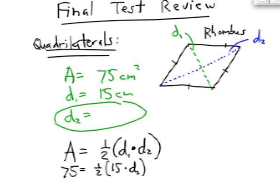Let's go ahead and solve this. I can multiply both sides by 2, which is the way I can get rid of the fraction, and therefore I have 150 equals 15 d2.